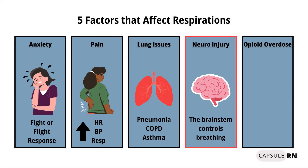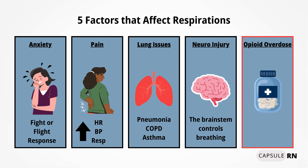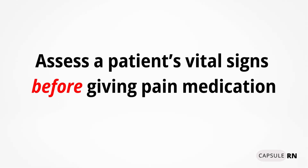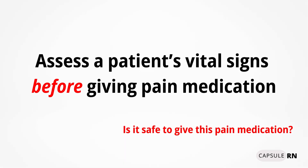And fifth, there's opioid overdose. Too much opioid pain medication can suppress the brain so it can't send out its typical messages to the lungs to breathe as often. Because of the over-sedation, the respiratory rate for adults will decrease to less than 12. It's incredibly important for nurses to assess their patients' respirations before giving a patient-ordered pain medication to make sure it is safe to do so.